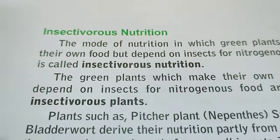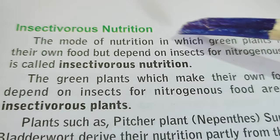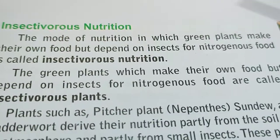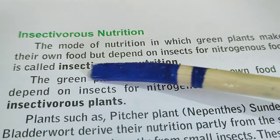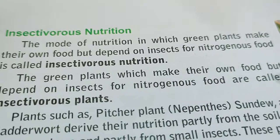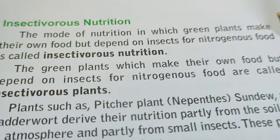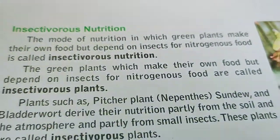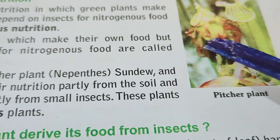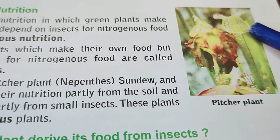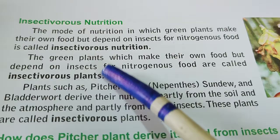The last category of heterotrophic plants are insectivorous plants, which follow the insectivorous mode of nutrition. It is the mode of nutrition in which green plants make their own food but depend on insects for nitrogenous food. Nitrogen is a very important component for plants and animals, and these plants cannot obtain sufficient nitrogen from the environment. Therefore, they complete their nitrogenous needs from insects.